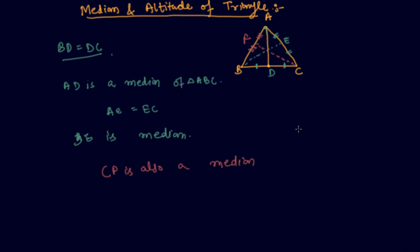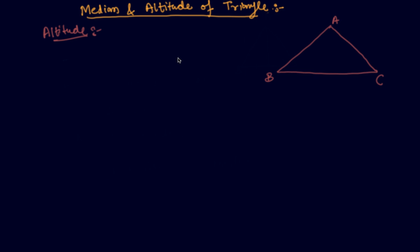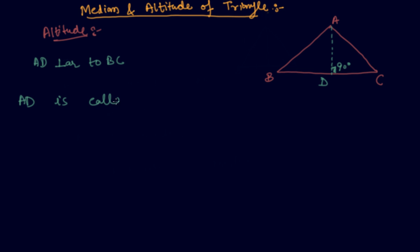Now let's come to what is an altitude of a triangle. An altitude means from any vertex, if I drop a perpendicular to any other side. So if this point is D and AD is perpendicular to BC, it is making an angle of 90 degrees here.